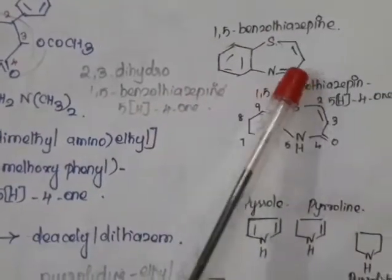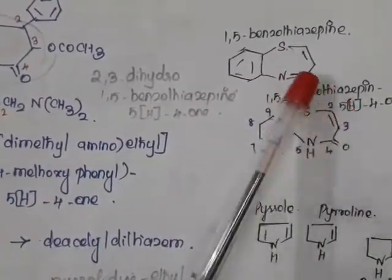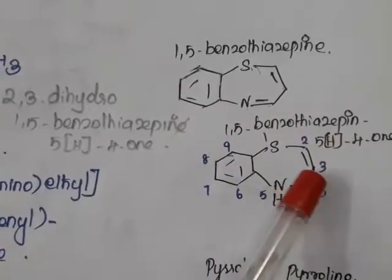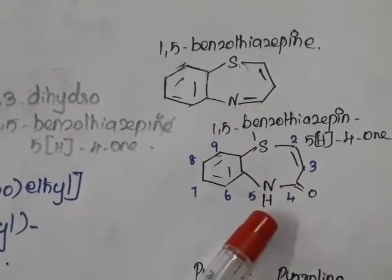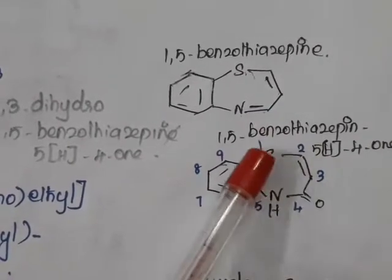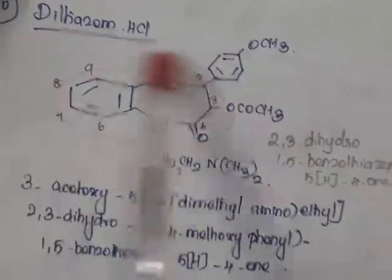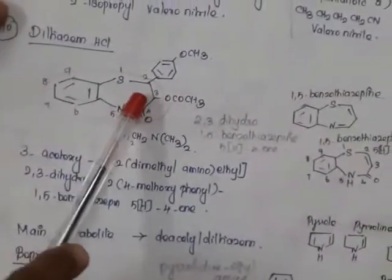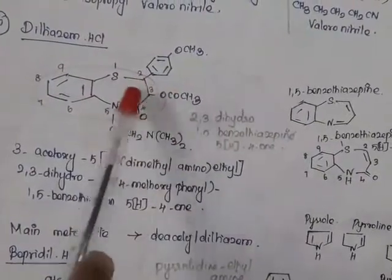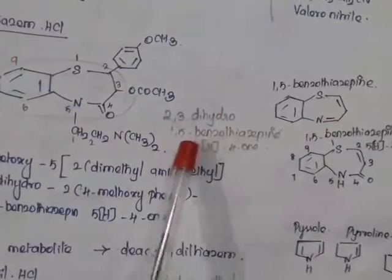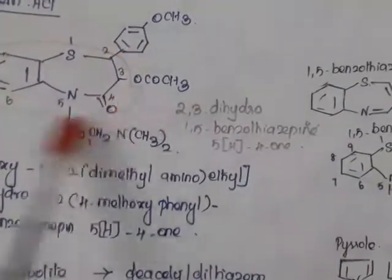Now, if a double bond is removed between positions 2 and 3, and a ketone is placed at position 4 with hydrogen on nitrogen at position 5 to satisfy valency, this is called 1,5-benzothiazepine-5H-4-one. Since the bond between 2 and 3 is removed, we add two hydrogens, making it 2,3-dihydro-1,5-benzothiazepine-5H-4-one. That is the basic ring present in diltiazem.